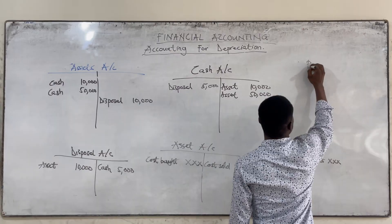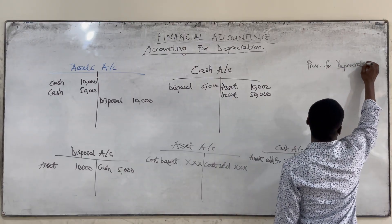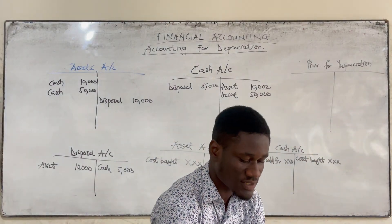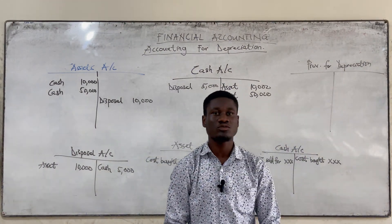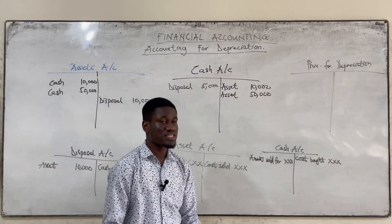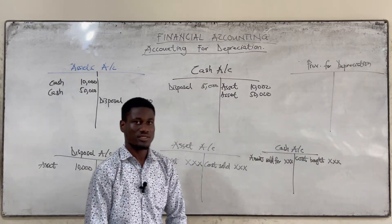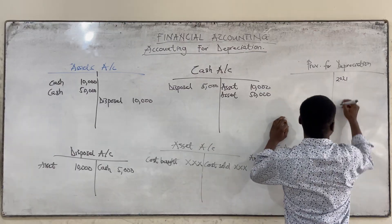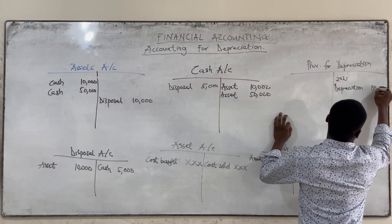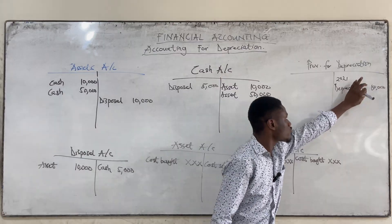We will go to provision for depreciation. When we come to provision for depreciation, the yearly depreciation of the assets we have in our premises will be recorded at the credit side. If we have four assets, we add the depreciation together and that total amount is what we record at the credit side. So let's say in 2021 we had a depreciation of 10,000 — the depreciation charged for the whole year is what we are going to see at the credit side.